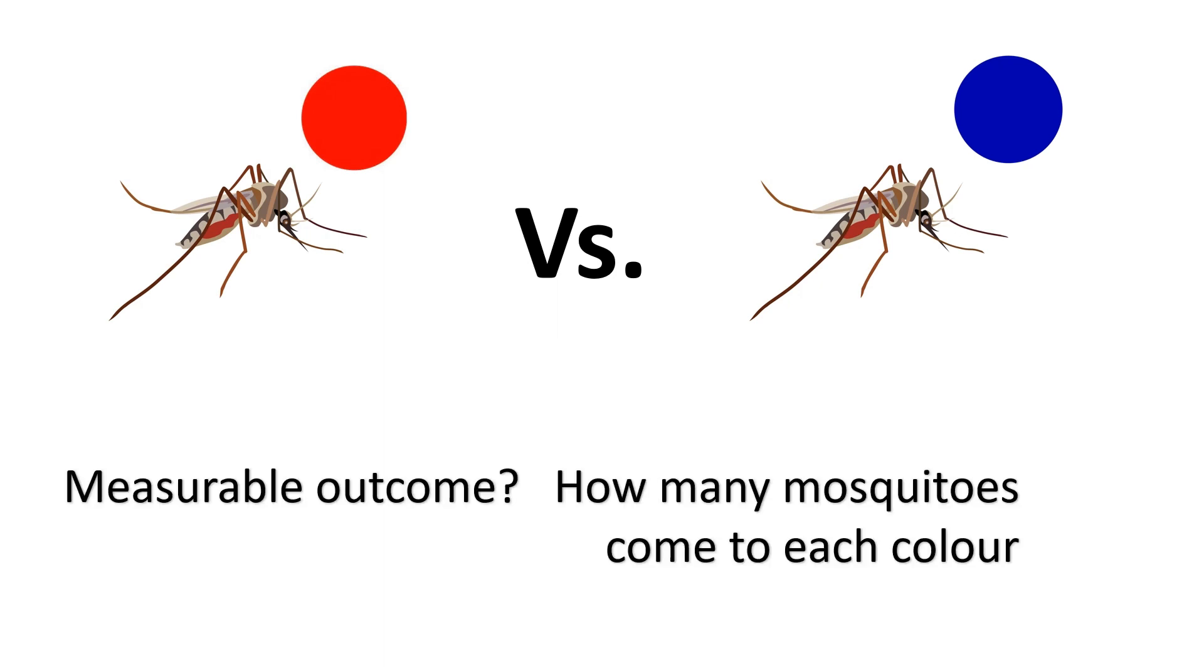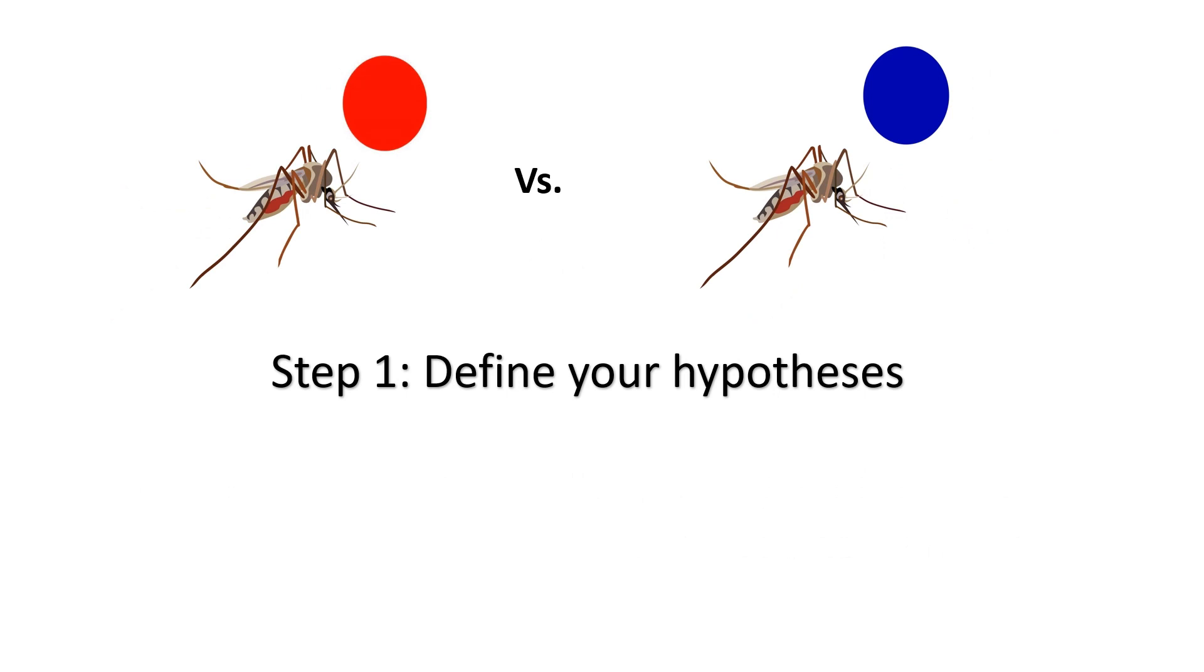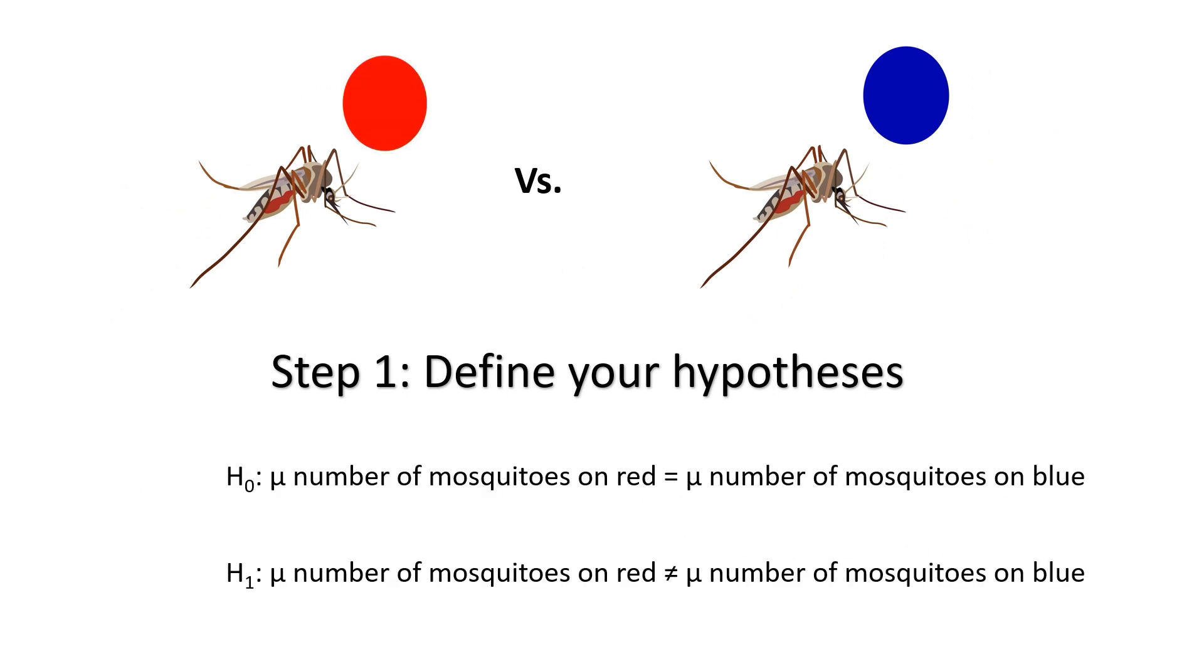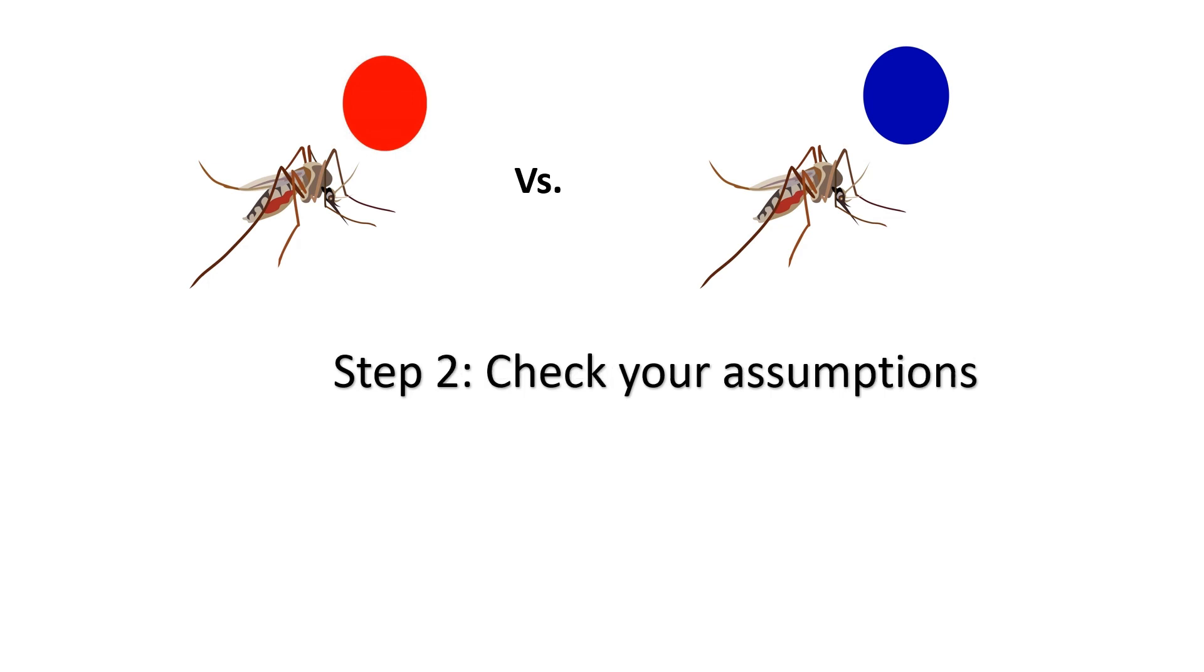So let's do a two-sided test. I just want to see if there's a difference between the colors red and blue and how many mosquitoes come to each. So step one, let's define our hypotheses. We can see that I'm using the equals and not equal sign, meaning that there is no assumption in our hypothesis and we are doing a two-sided test.